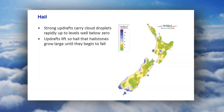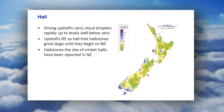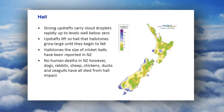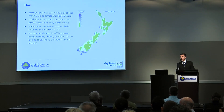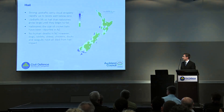In New Zealand we've had hailstones the size of cricket balls recorded, and interestingly, golf ball-sized hailstones in New Zealand are actually quite frequent apparently. There have been no human deaths, but a number of livestock and animals have been killed in New Zealand from hail — and as Met Service informed me today, two goldfish in Canterbury apparently died a couple of years ago as well.